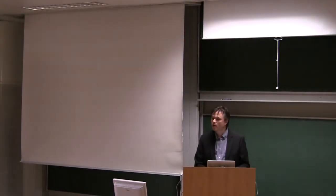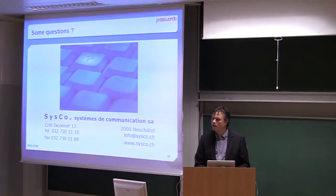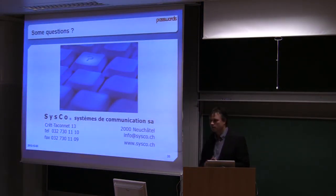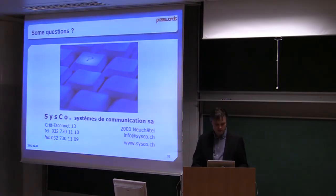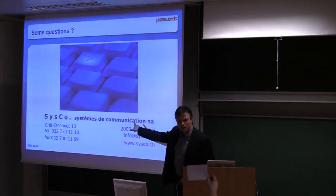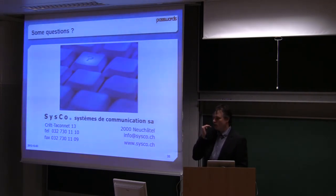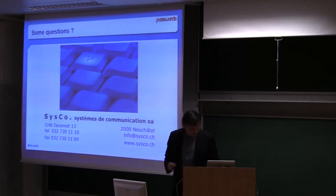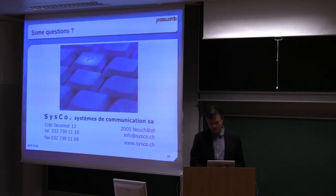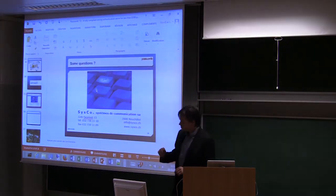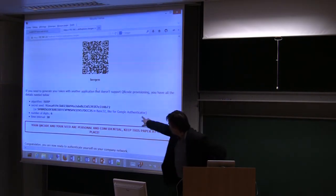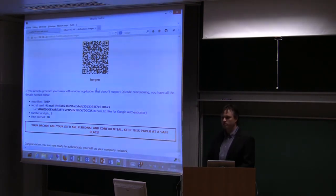Do we provide a possibility to use only QR code or, for example, Google Authenticator provides some string of... You didn't see that because it was there but it was under. The question was, do we only provide QR codes or can we use something else? I didn't scroll up to the end of the paper. You see here you have the algorithm, you have the seed, the number of digits, and the time interval.